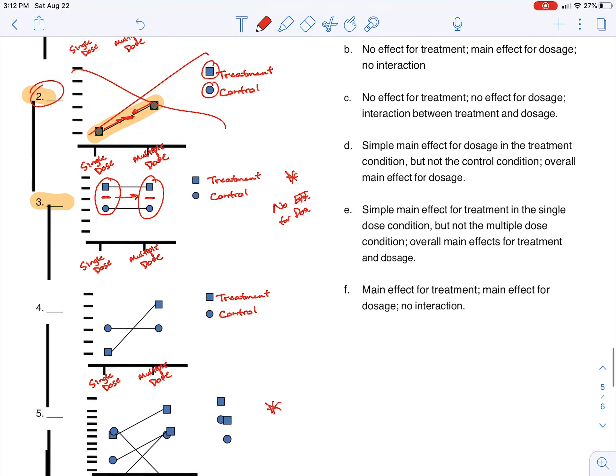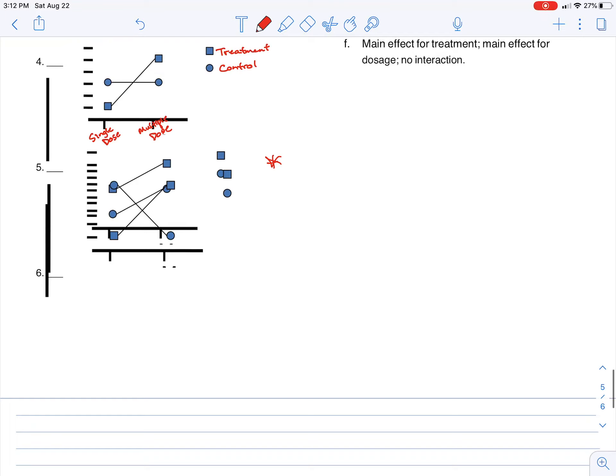Just to double check our work, we'll go down here to number five. Let's take a look. The average of our two single dose conditions versus the average of our multiple dose conditions. Here we look and see the average of the single dose to the average of the multiple dose does go up.